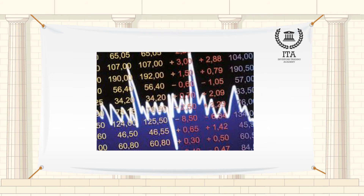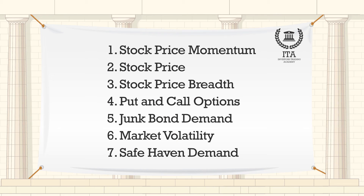The Fear and Greed Index is based on seven indicators: 1. Stock price momentum. 2. Stock price. 3. Stock price breadth. 4. Put and call options. 5. Junk bond demand. 6. Market volatility. And 7. Safe haven demand.